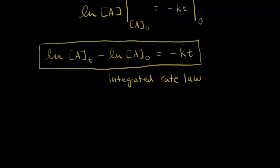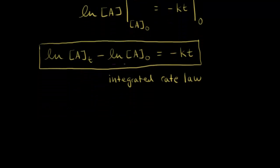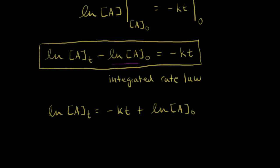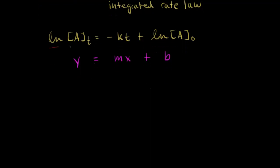Let's rearrange by adding the natural log of the initial concentration to the right side. Therefore, the natural log of the concentration of A at time T is equal to negative kt plus the natural log of the initial concentration of A. This follows the form of a straight line: y = mx + b. Here, the natural log of A is on the y-axis, time is on the x-axis, the slope m equals negative k, and b — the y-intercept — is the natural log of the initial concentration of A.